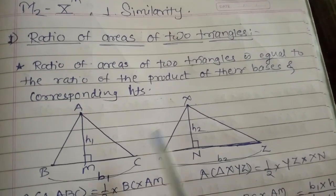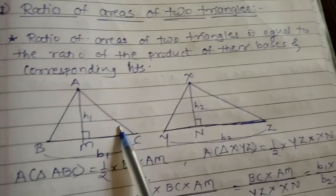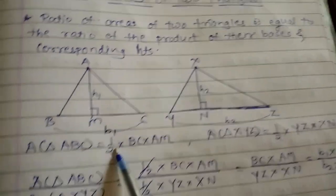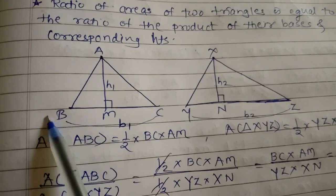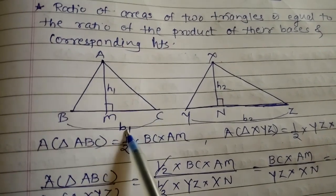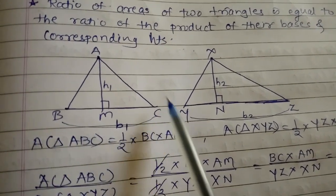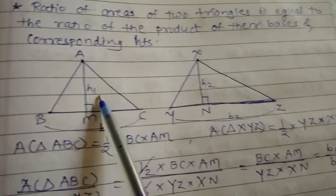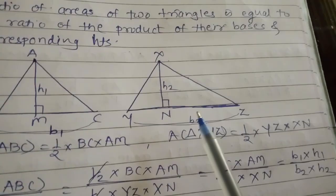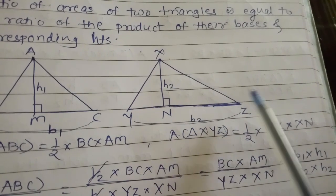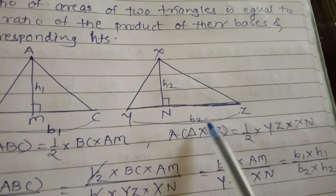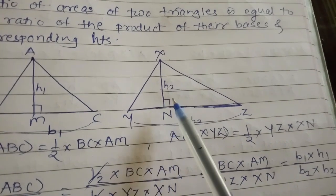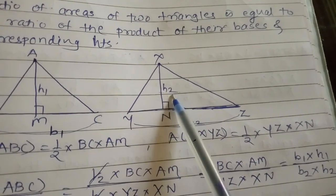The triangles are ABC and XYZ. You know the formula for area of a triangle: half into base into height. Here, B1 represents the base BC and H1 represents the height AM. Similarly, in the second triangle XYZ, YZ is the base denoted by B2, and XN is the height denoted by H2.